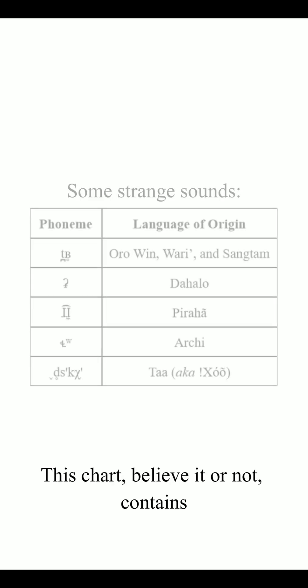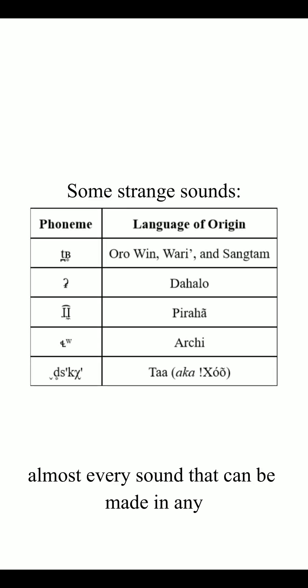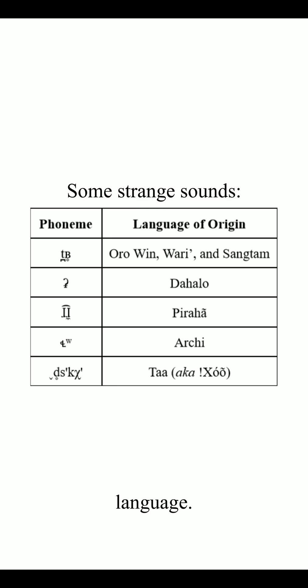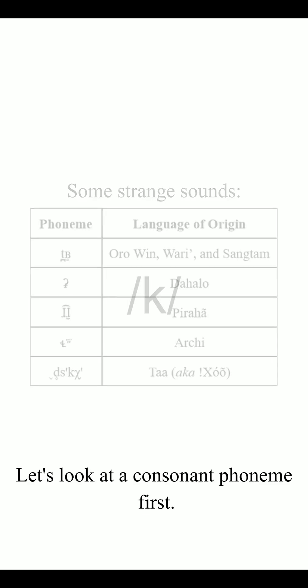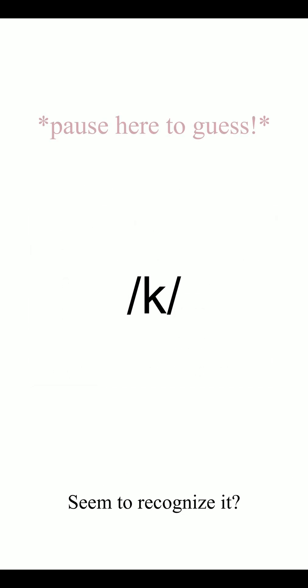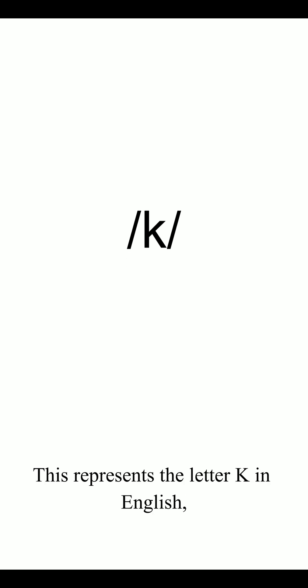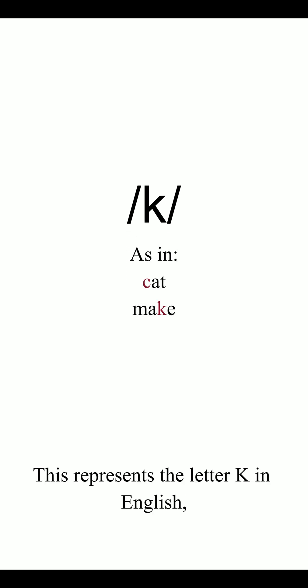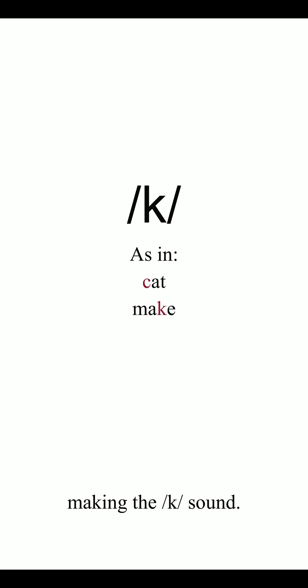This chart, believe it or not, contains almost every sound that can be made in any language. Let's look at a consonant phoneme first — seem to recognize it? Exactly. This represents the letter K in English, making the sound.